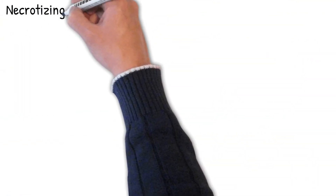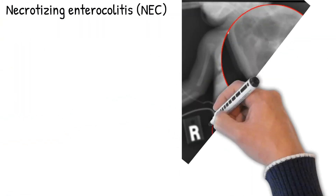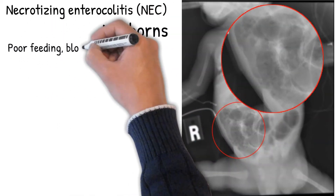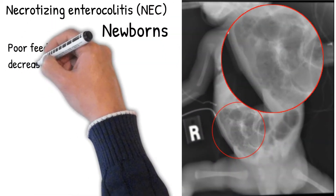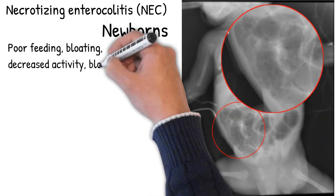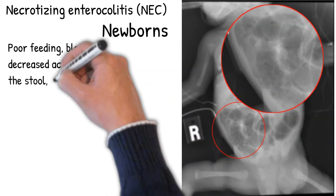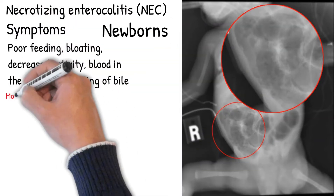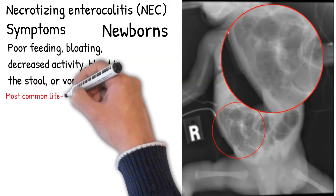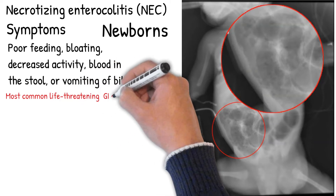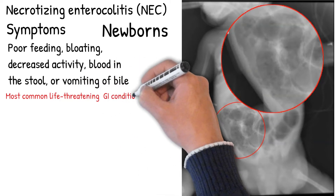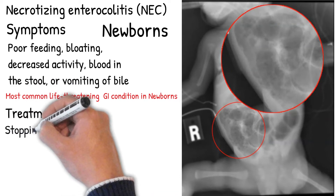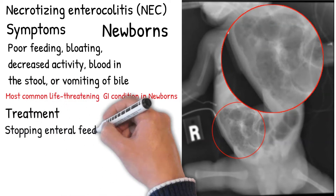Necrotizing enterocolitis (NEC) typically occurs in newborns. Symptoms may include poor feeding, bloating, decreased activity, blood in the stool, or vomiting of bile. It is the most common life-threatening abdominal surgical emergency of the gastrointestinal tract in the newborn period. It affects premature infants in 90% of cases. Major risk factors include low birth weight, sepsis, congenital heart disease, respiratory distress syndrome, and maternal cocaine abuse.